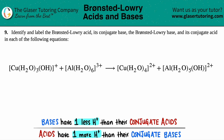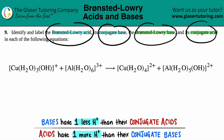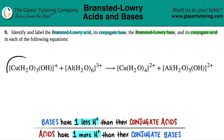Number nine: identify and label the Brønsted-Lowry acid, its conjugate base, and the Brønsted-Lowry base and its conjugate acid in each of the following equations. We have this balanced equation: CuH₂O₃OH H⁺ plus AlH₂O₆³⁺ yields CuH₂O₄²⁺ plus AlH₂O₅OH²⁺. We have to find the four components: the Brønsted-Lowry acid, the conjugate base, the Brønsted-Lowry base, and the conjugate acid.